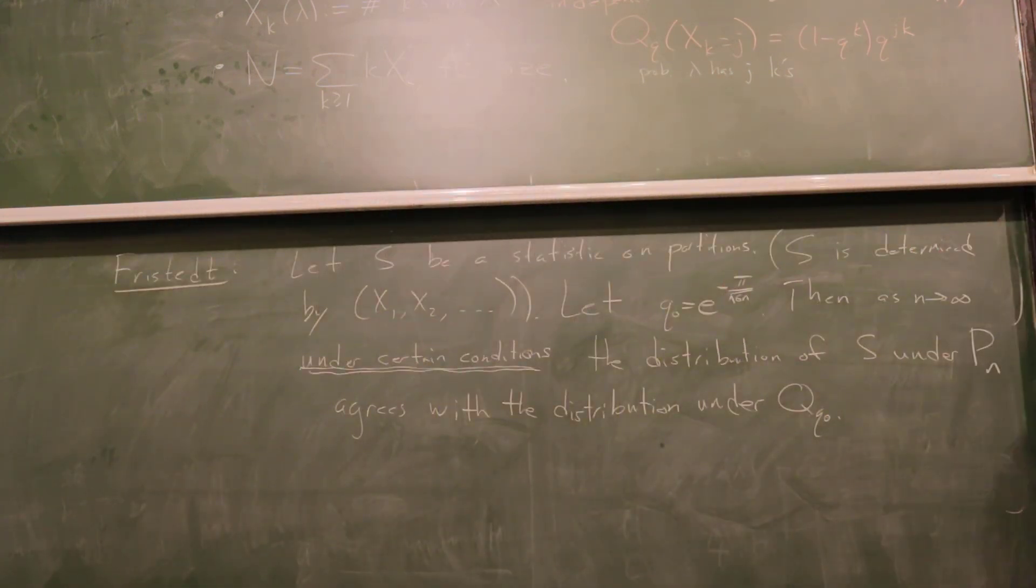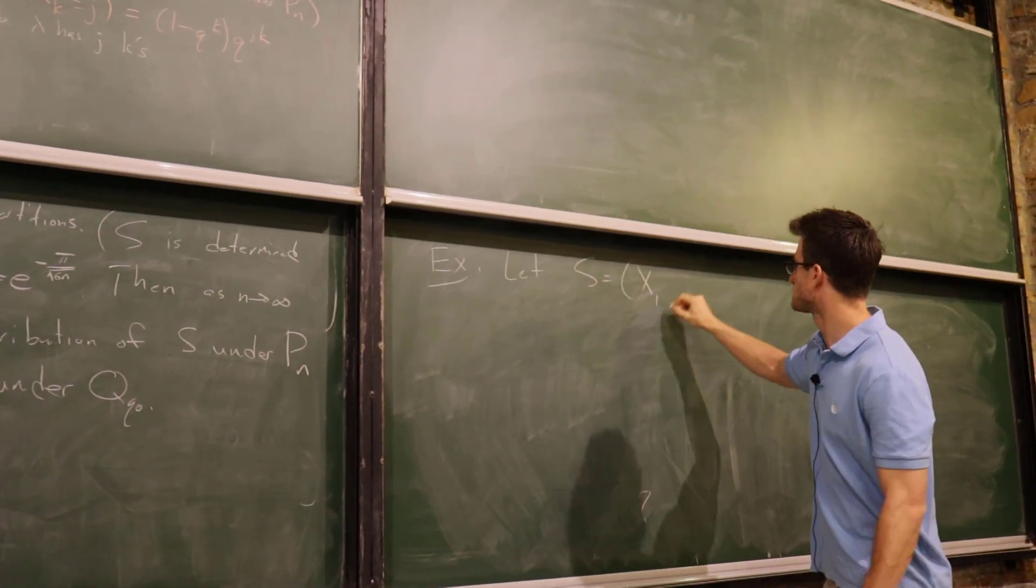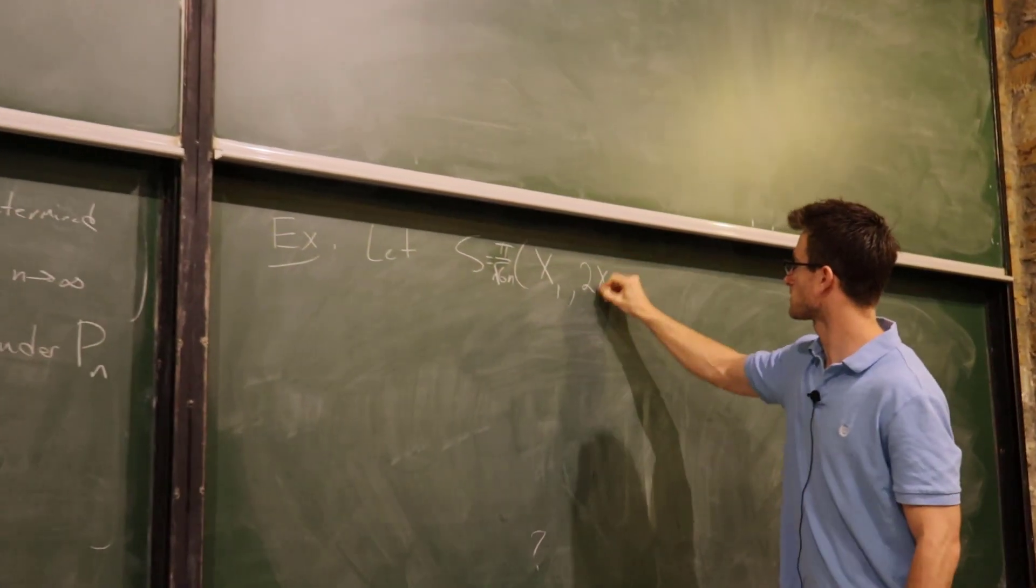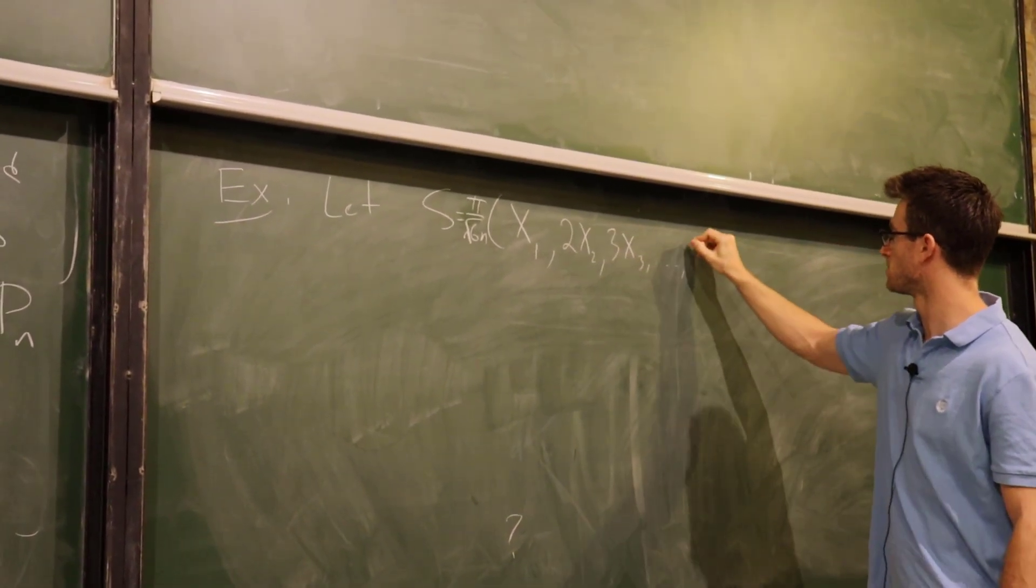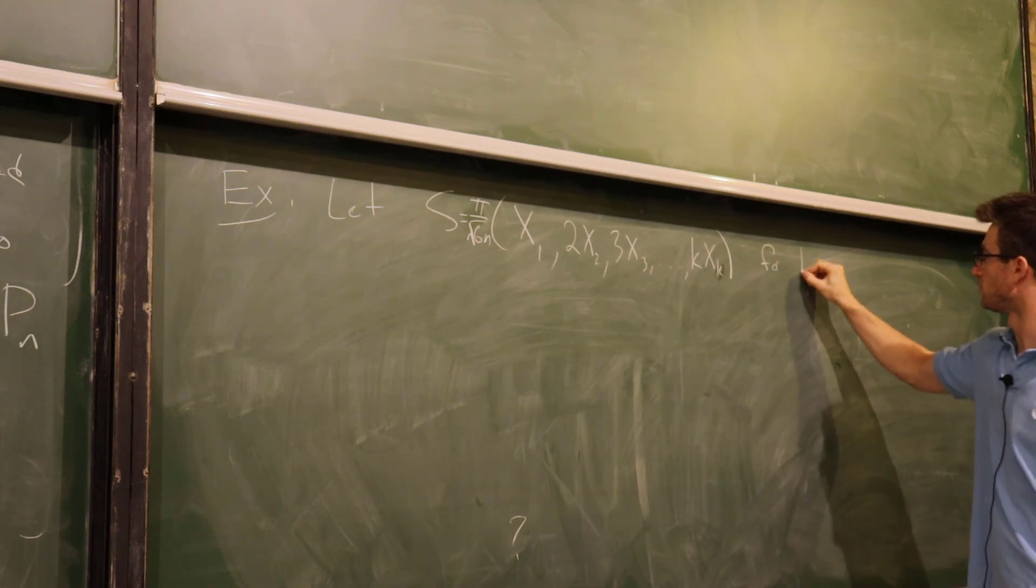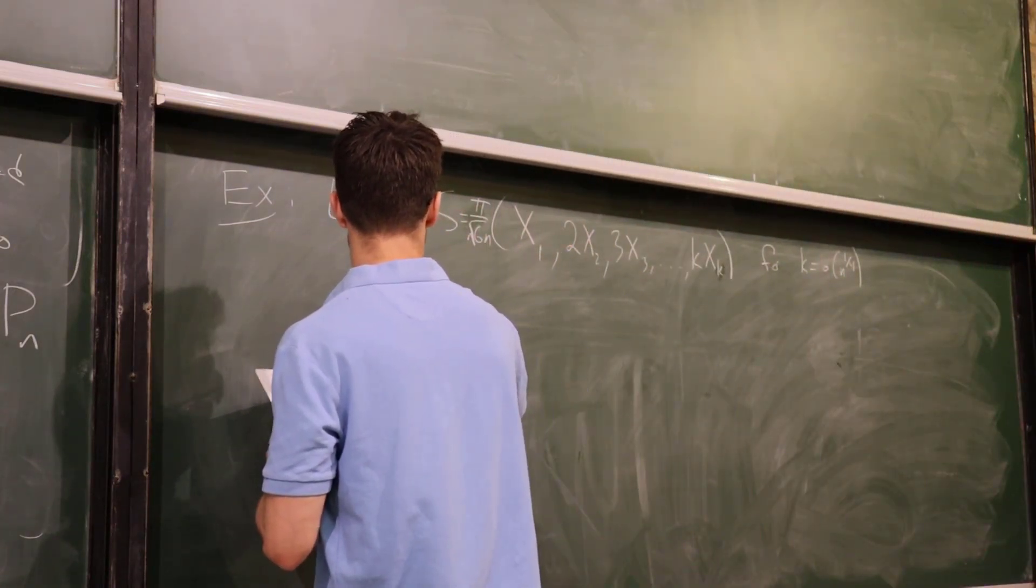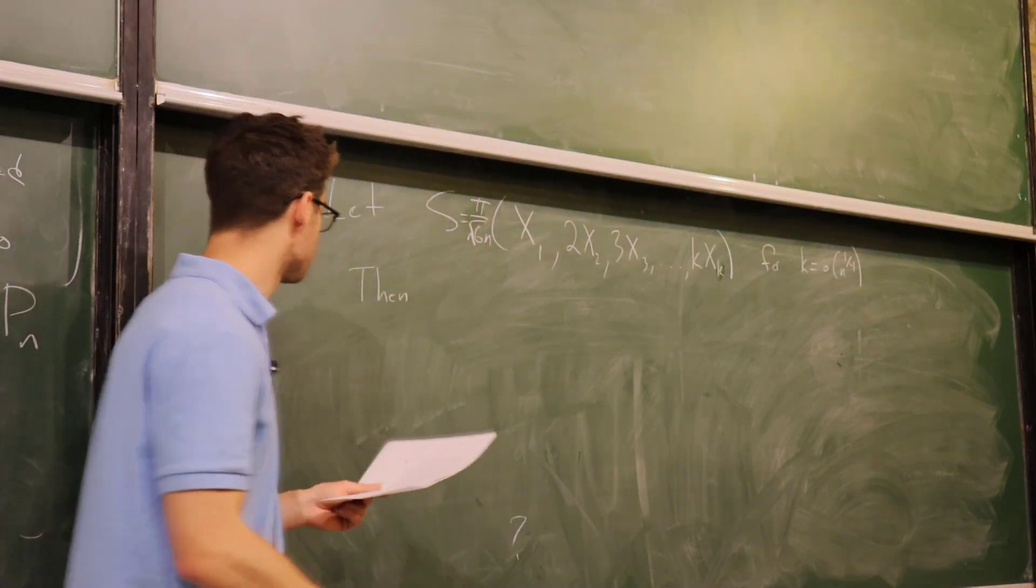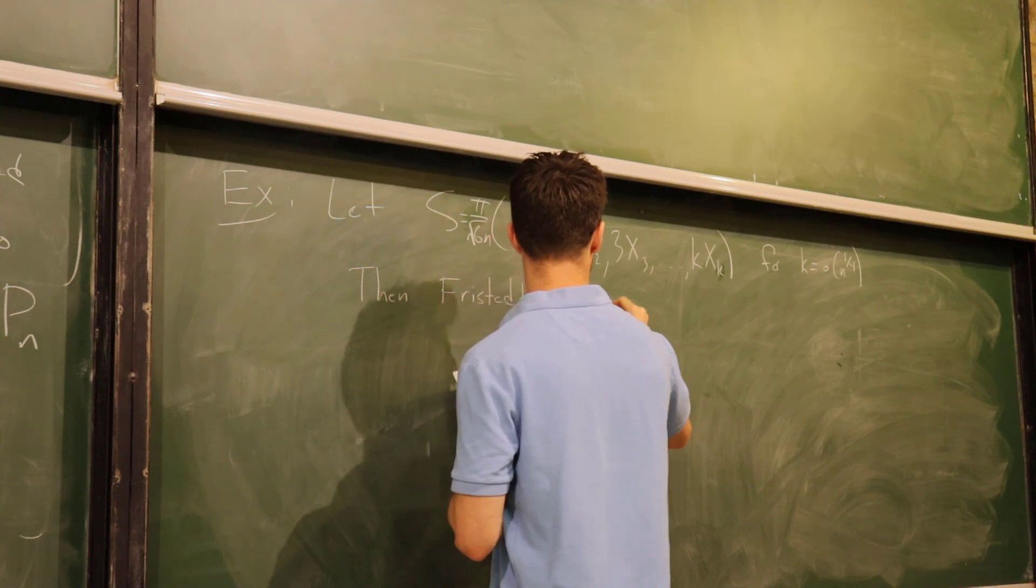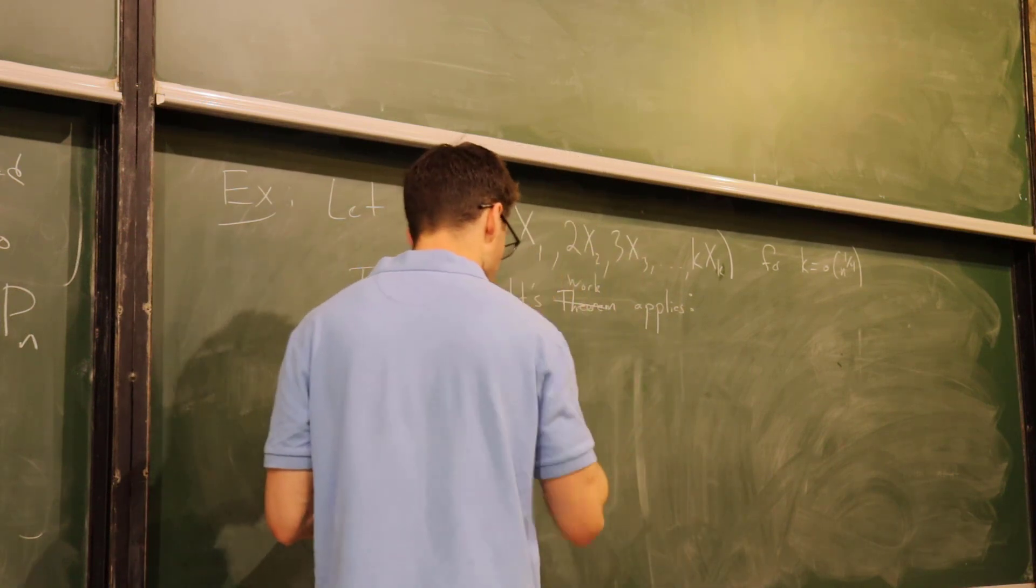The choice we make, perhaps no surprise, is the saddle point. We will choose q naught to be the saddle point that we've seen a lot this week: e to the minus pi over root 6 n. Then as n tends to infinity, under certain conditions, which I'm not going to write, the distribution of s under the uniform probability measure agrees with the distribution under q q naught. Now I'm not going to write the certain conditions here. You can see his paper if you're interested. But just take it from me that it does apply in these examples I'm going to write up.